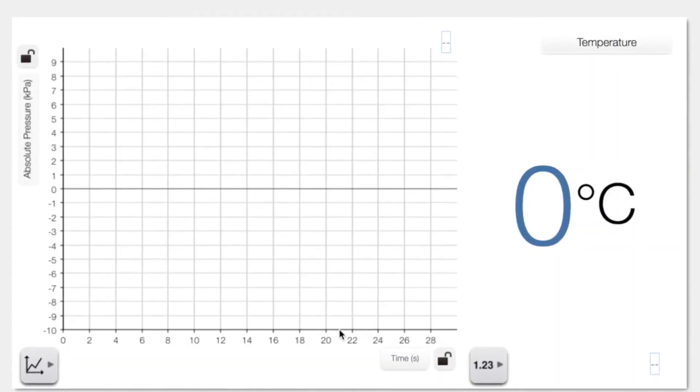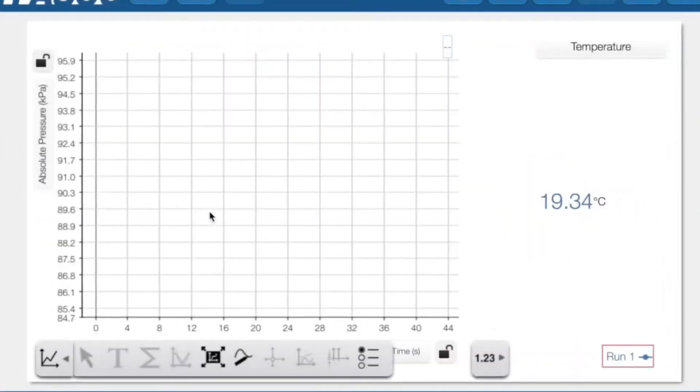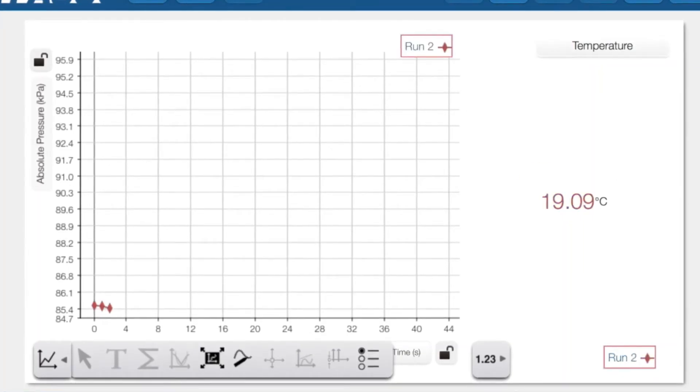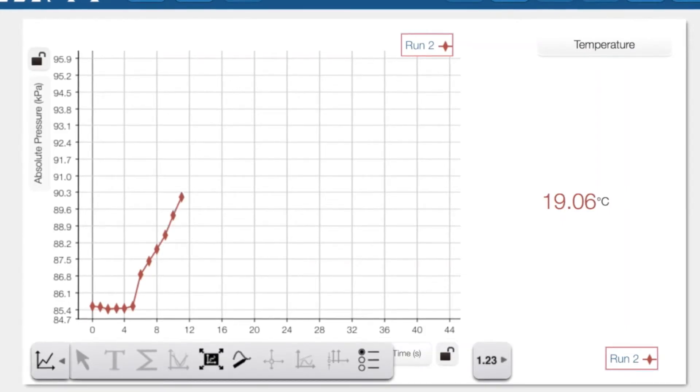Now you should be set up to collect data. It's a good idea before you set up everything to measure for your experiment that you check for leaks. A good way to do this is just to get some of the ingredients, your catalase and hydrogen peroxide, put them into the flask and put the rubber stopper in and make sure that the pressure is actually increasing which you'll see on your graph that you've set up.